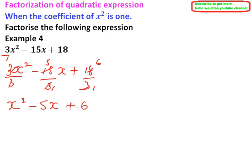Now we look for 2 numbers such that when you add them you get minus 5, when you multiply them you get 6. So these are minus 2 and minus 3.